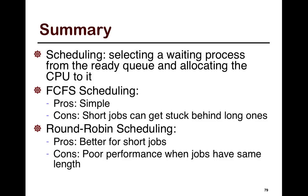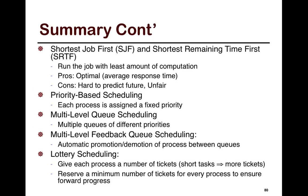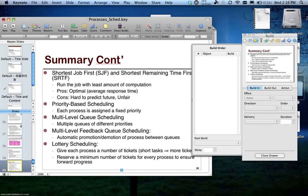We looked at quite a few policies. The first was FCFS: pros — it's simple; cons — short jobs can get stuck behind long ones. Then we looked at round-robin: pros — better for short jobs and better performance when jobs are the same length. Then we looked at shortest job first and shortest remaining time first, which is the preemptive version. These run the job with the least amount of computation left. Pros: it's optimal — the average response time is always the lowest among any scheduling policy. Cons: it's hard to predict the future and it's unfair because long-running jobs can get queued behind short ones.